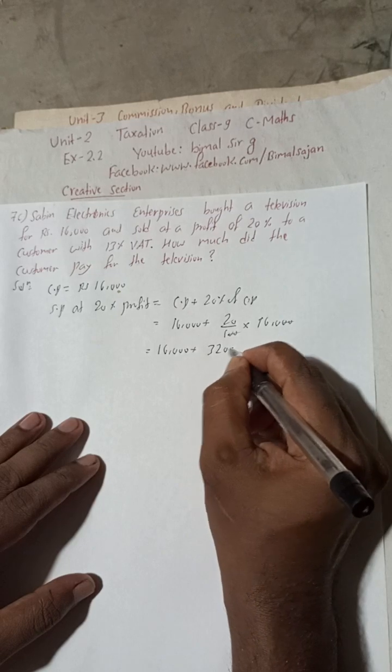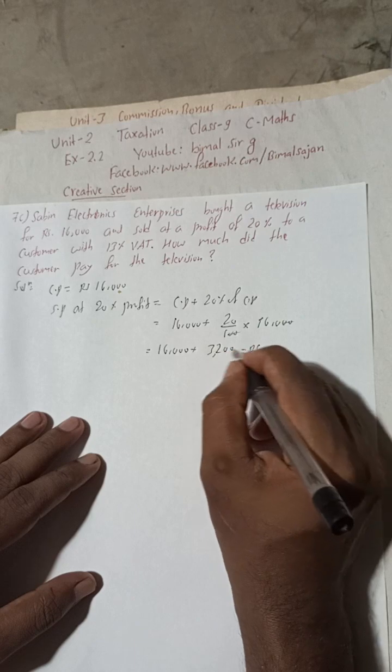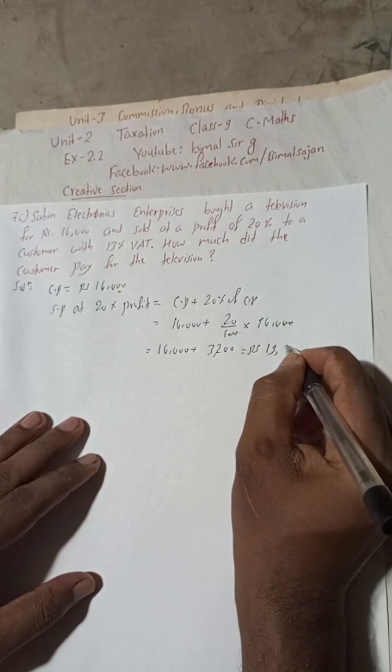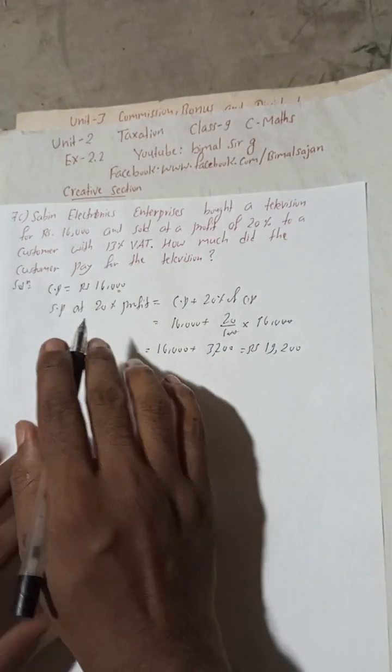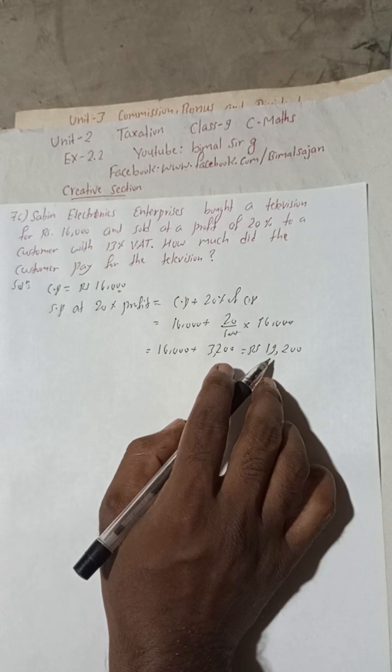This is equal to 16,000 plus 16 to 32 and 20, so 3,200. This is equal to Rs 19,200. So SP at 20% profit will be Rs 19,200.